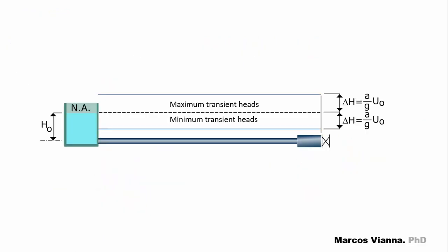In these cases, transient heads or transient pressures will form along the pipeline. They must be protected against these additional pressures. Otherwise, they can burst or collapse.